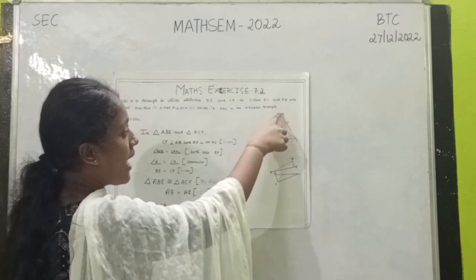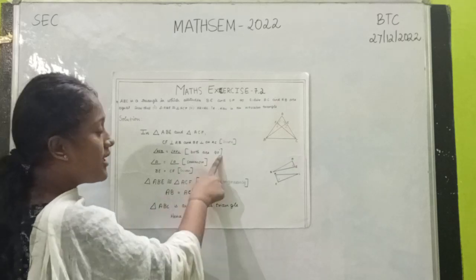So angle AEB and angle AFC is equal to 90 degrees.